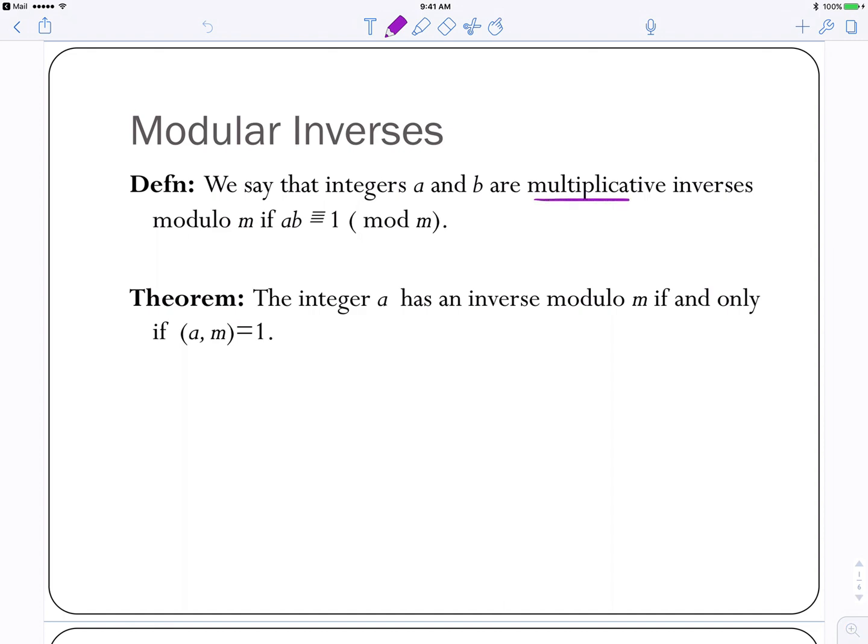We're finding multiplicative inverses, and that's two numbers that multiply together to get you 1 mod m. We were really finding multiplicative inverses in the last video when we were solving linear congruences, we just didn't give them that name. This theorem is important: a has an inverse mod m if and only if the greatest common divisor of a and m equals 1. If the greatest common divisor between a and m is greater than 1, then there is no inverse mod m.